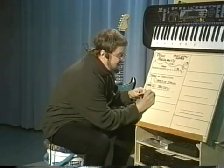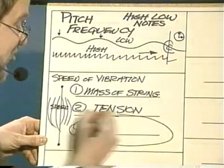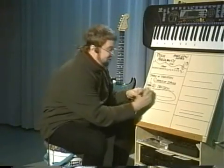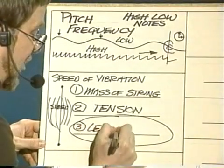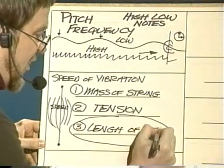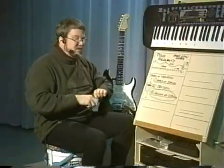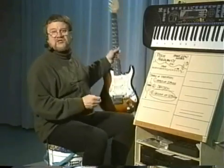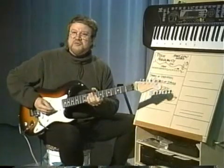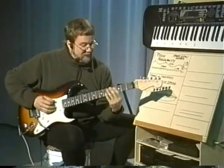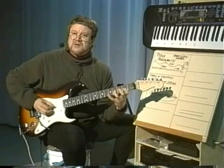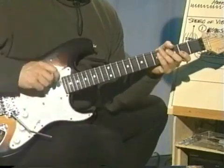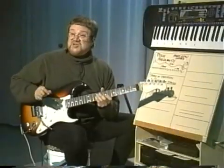Factor number three is really the big one when it comes to actually playing songs on your instrument. The third way we manipulate the vibrating speed of the string is by controlling the length of the string — moment by moment. How do you actually play different notes on a guitar? You move your fingers around on the neck of the guitar on these things called frets. When I move my fingers around up here, what I'm doing is changing the length of the string.